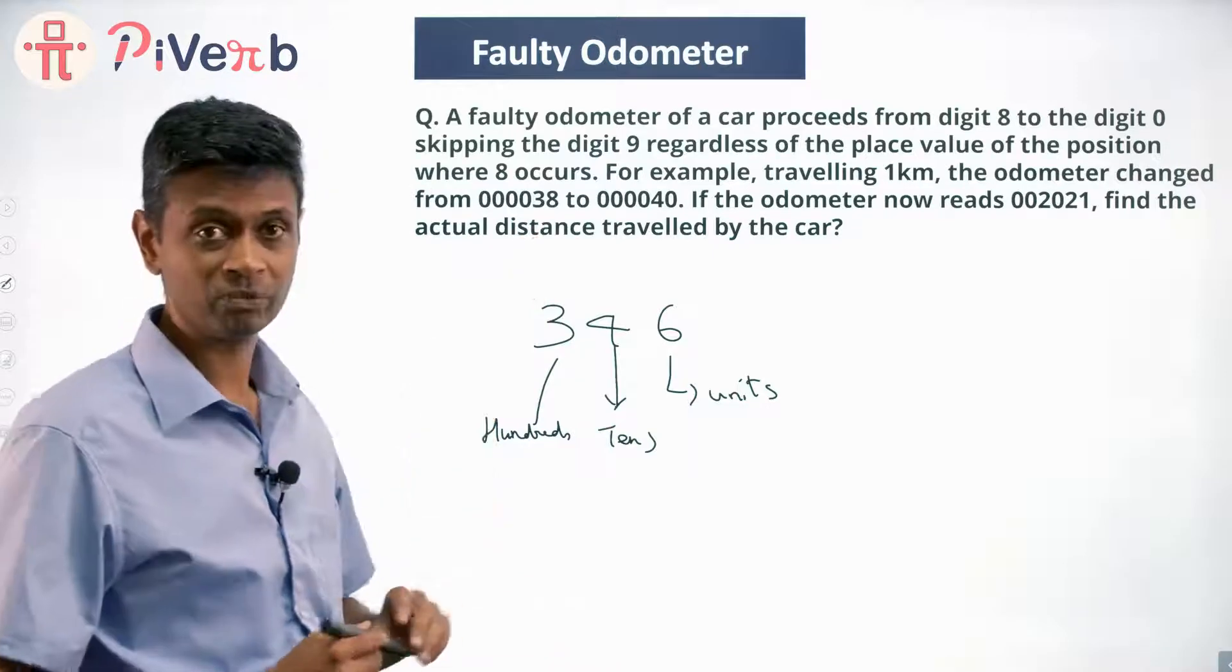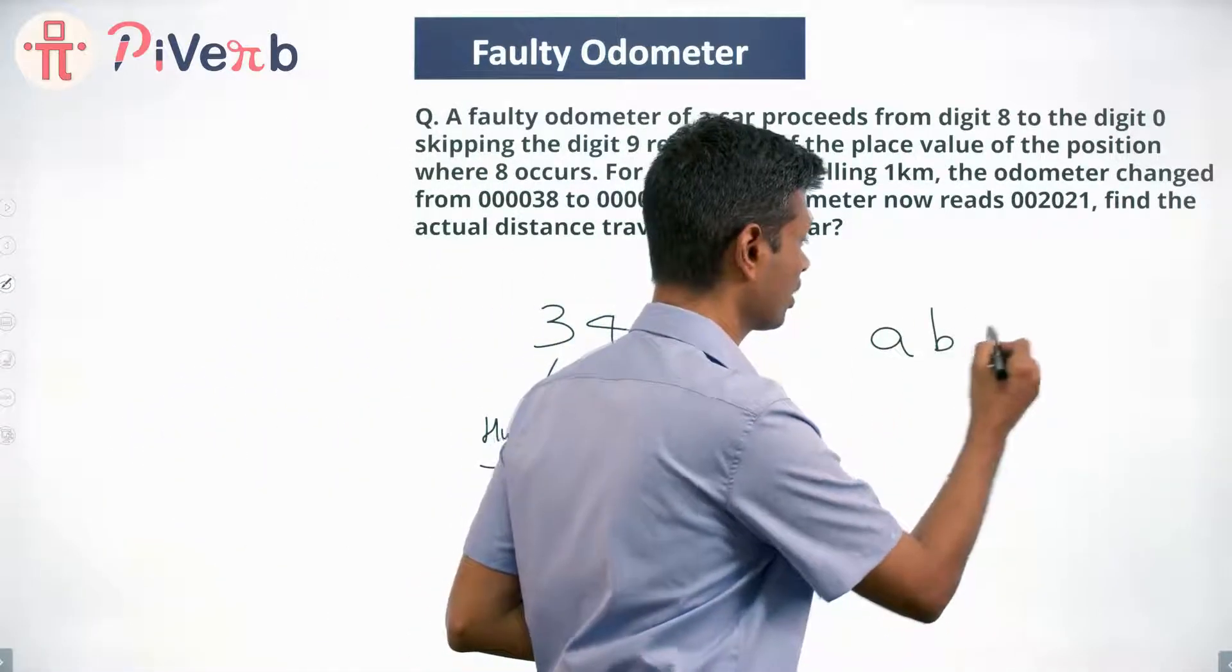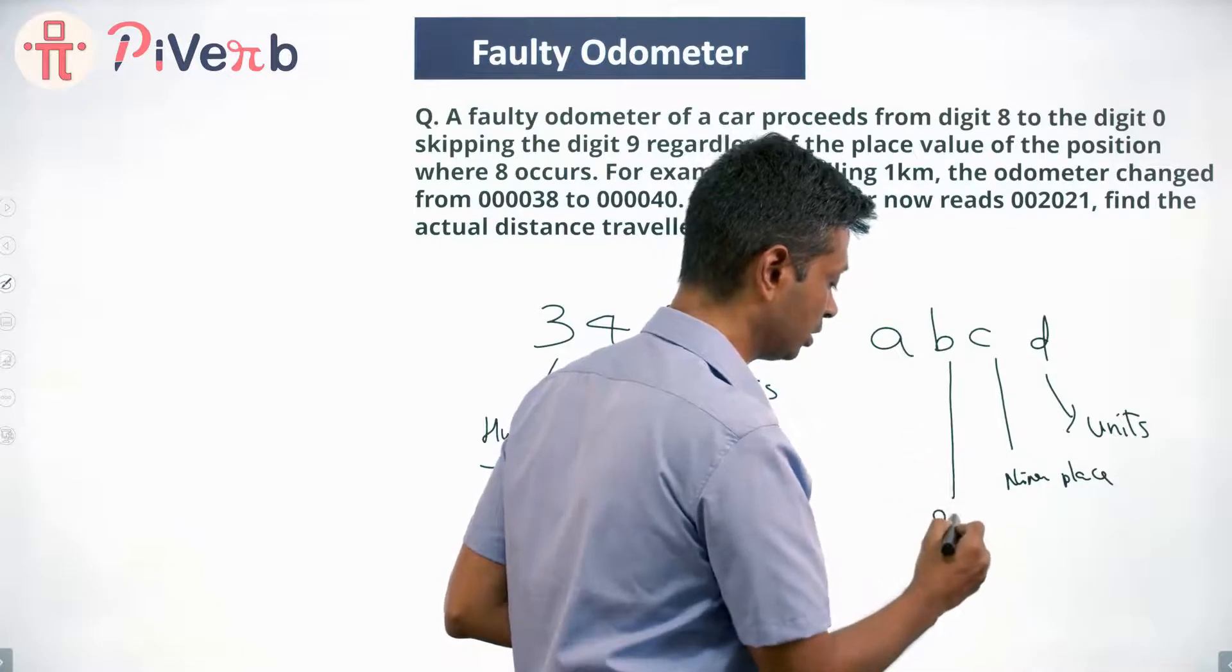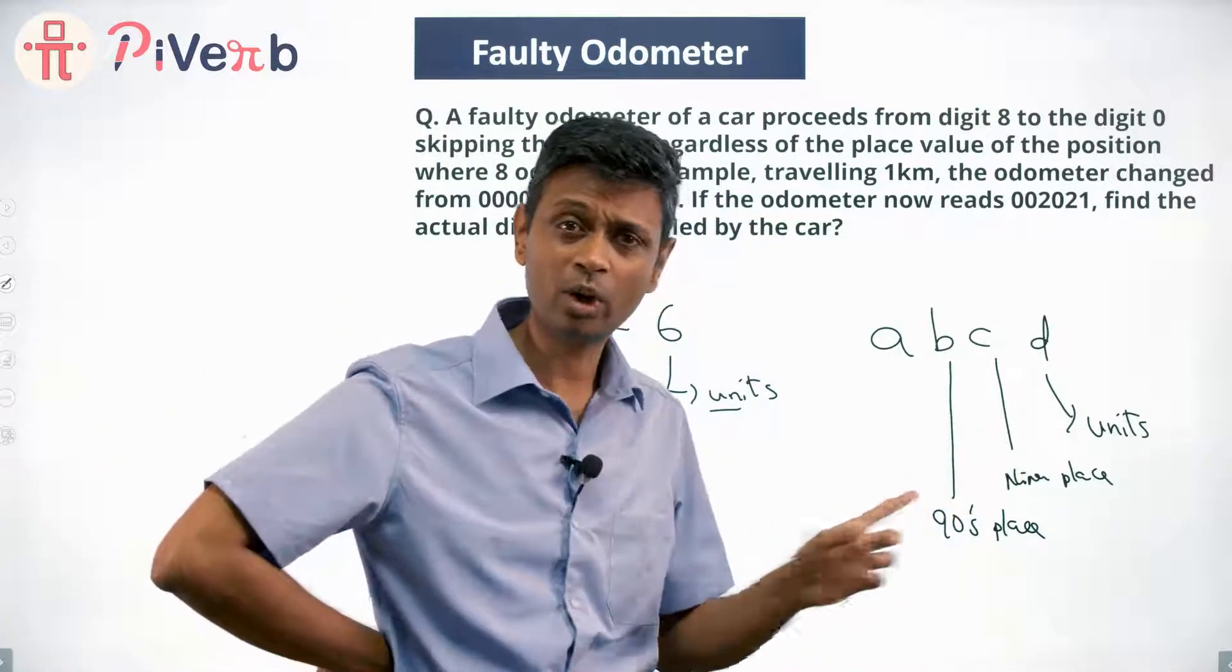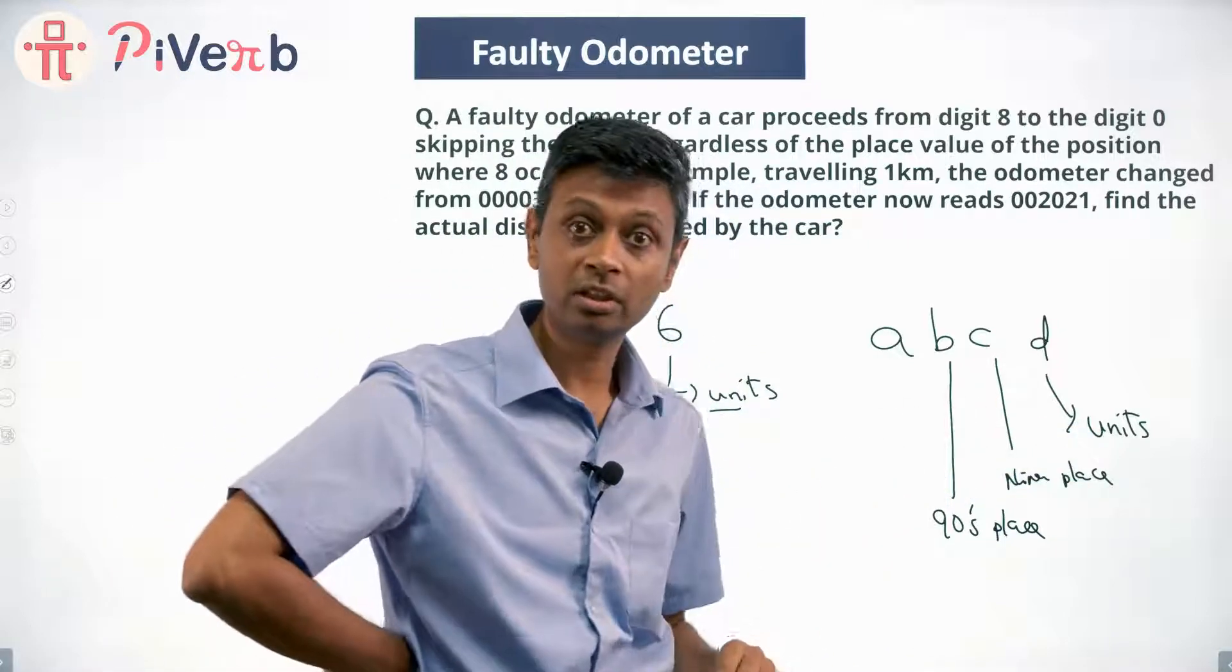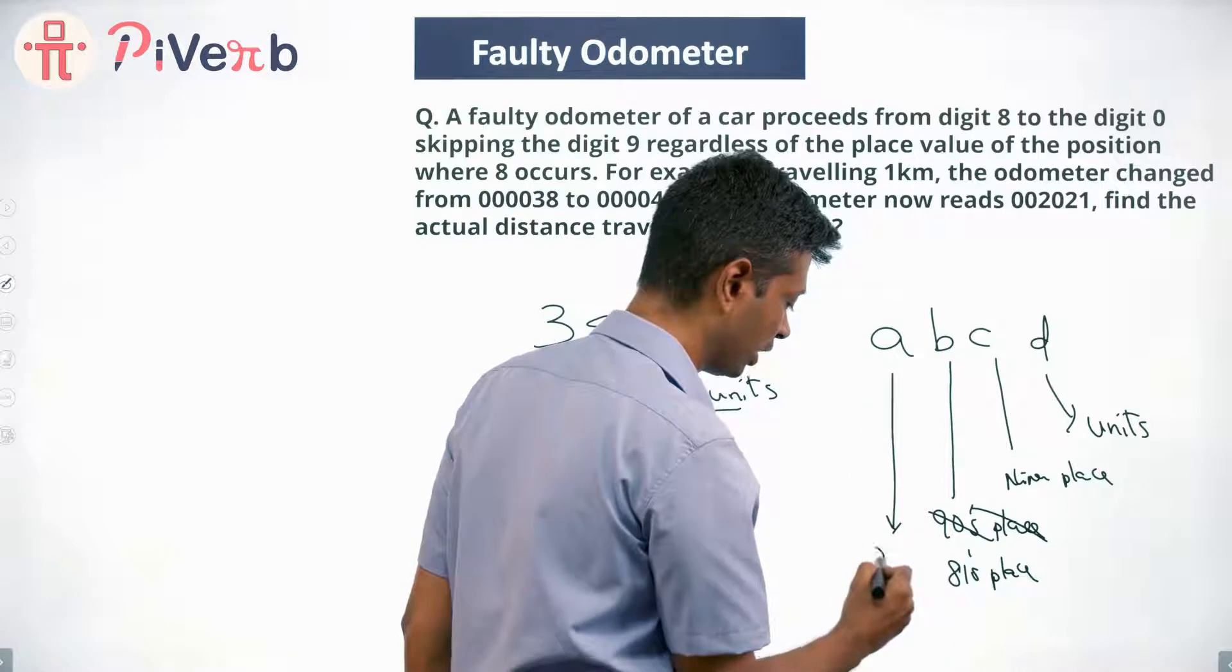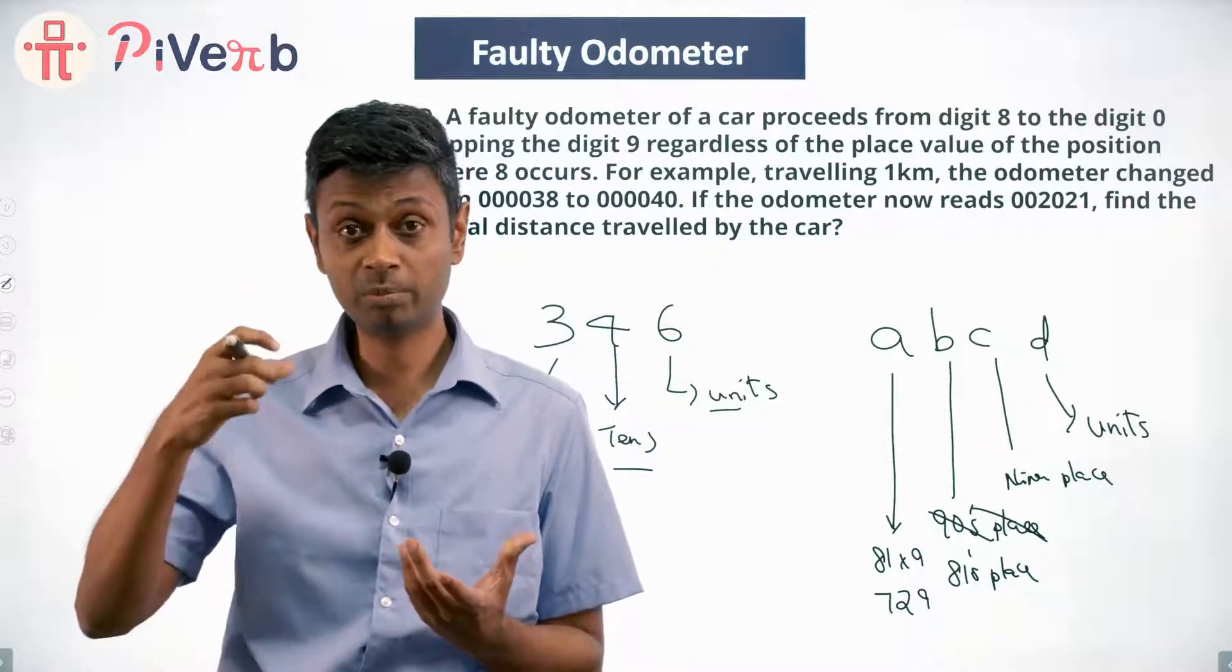This will also be similar to this, except we will not have units place, tens place and hundreds place. In this system, this will be called units place, this will not be tens place, this will be nines place, this will not be hundreds place, this will be nineties place. 10 units make a 10, 10 tens make a 100. 9 units make a nines place, 9 nines place make a nine-squared or 81s place, so it will go in steps of powers of 9: units place, nines place, nine squares place, nine cubes place.